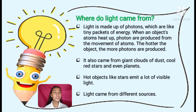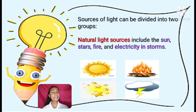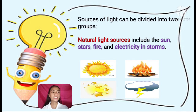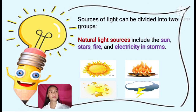Light comes from different sources, which can be divided into two groups. The first is natural light sources, which includes the sun, stars, fire, and electricity in storms. There are even some animals and plants that can create their own light, such as fireflies, jellyfish, and mushrooms. This is called bioluminescence.